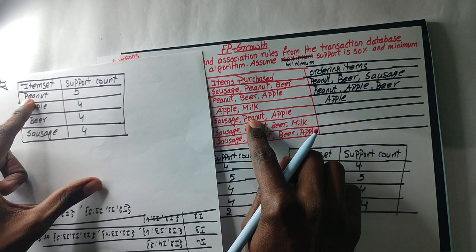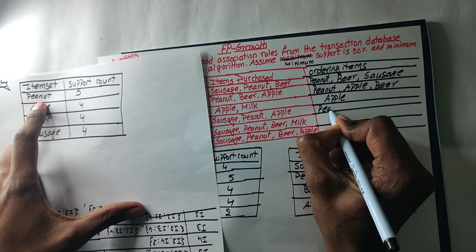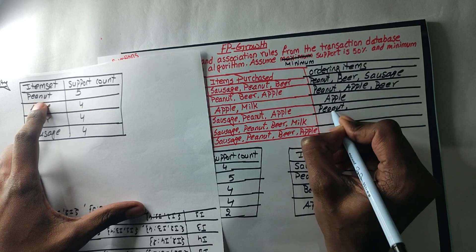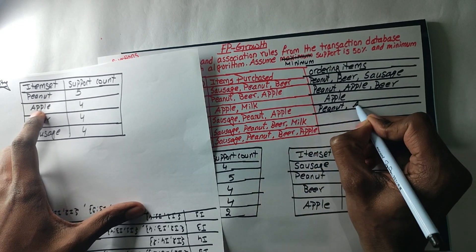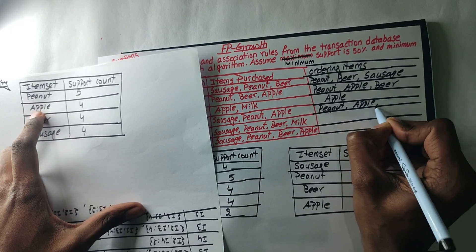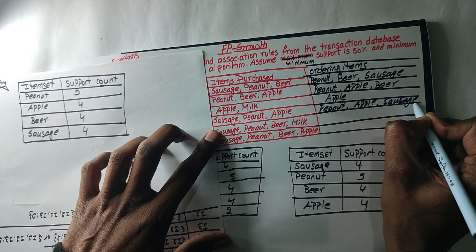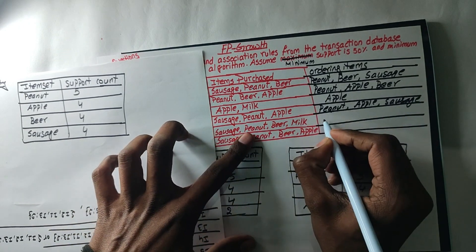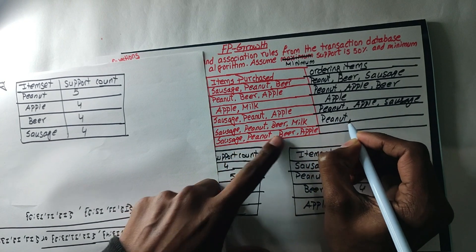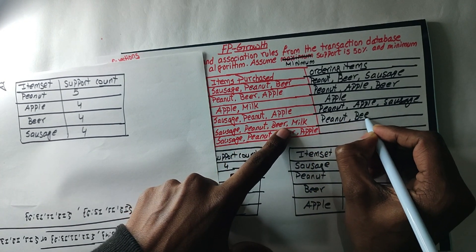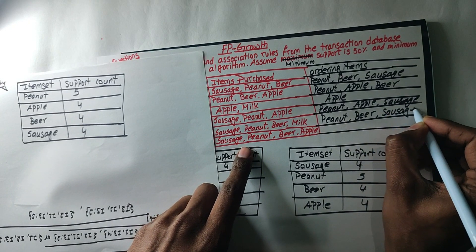Peanut — you have to do the ordering. The third path is apple — apple has to do it. And the third path is sausage. Then the third path is peanut. The third path is apple, beer, sausage, milk — reject.